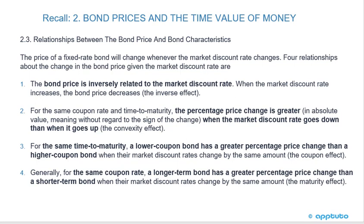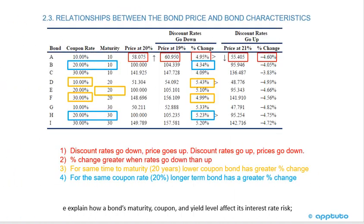Fourth, generally, for the same coupon rate, a longer-term bond has a greater percentage price change than a shorter-term bond when their market discount rates change by the same amount — the maturity effect. This LOS is about explaining how a bond's maturity, coupon, and yield level affect its interest rate risk, which is about the change in prices.